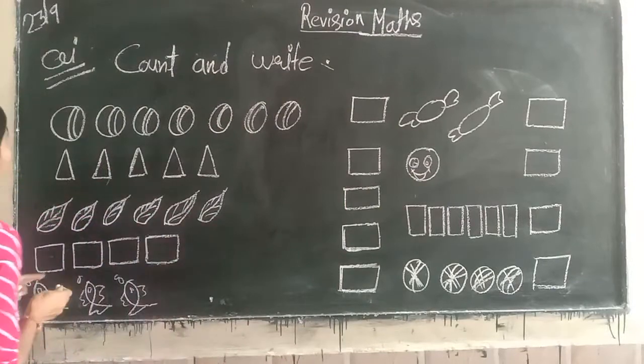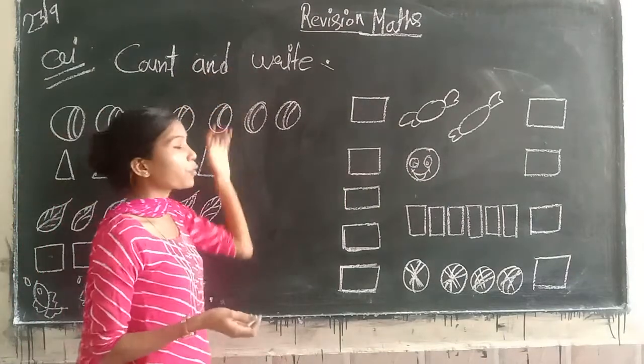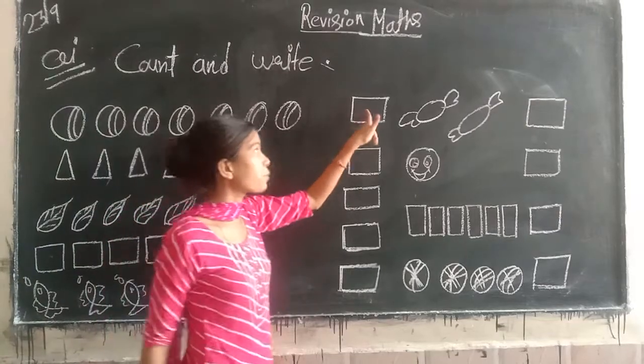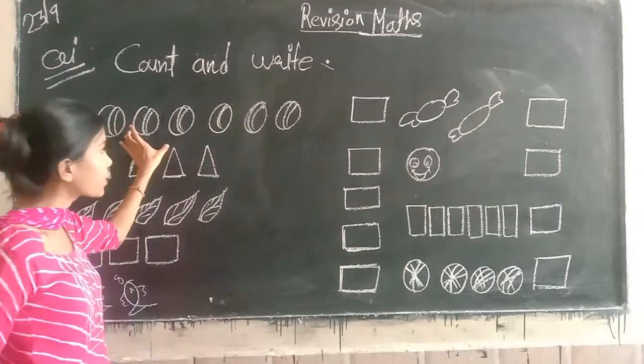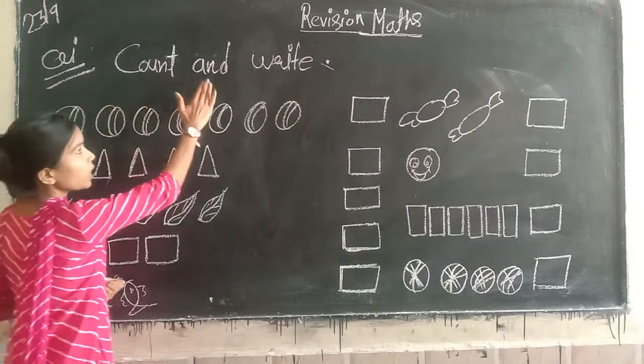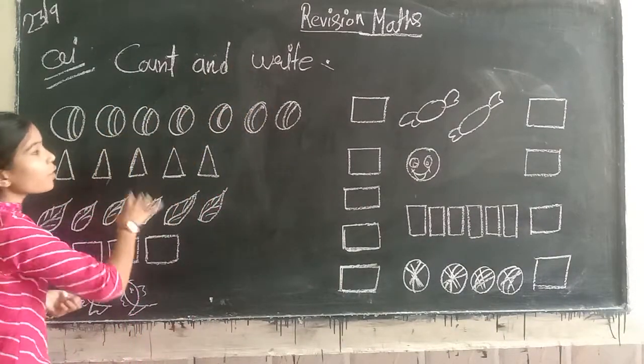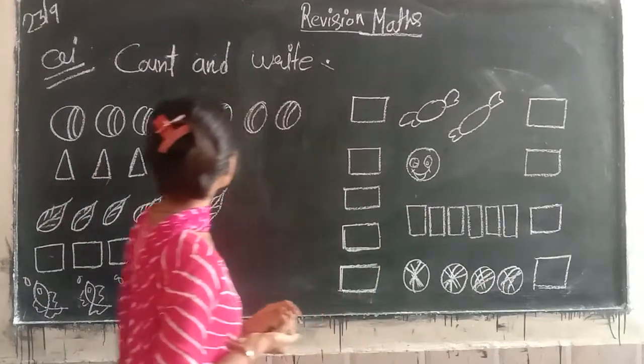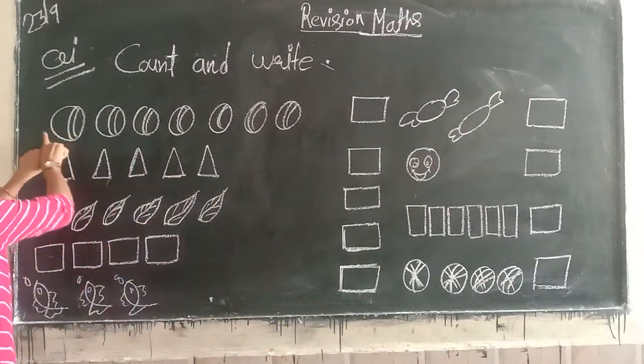So the first question is count and write. You have to count these objects and in this box you have to write. Count and write, you have to count then write. Okay?